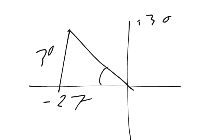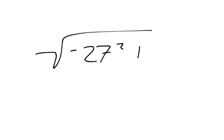And we need to figure out what this length is. So, the distance equals negative 27 squared plus 30 squared.